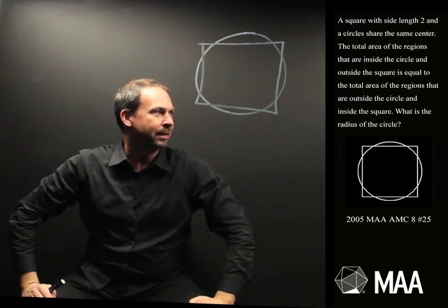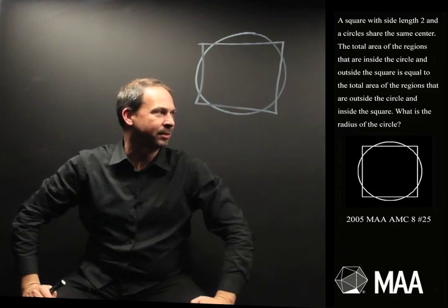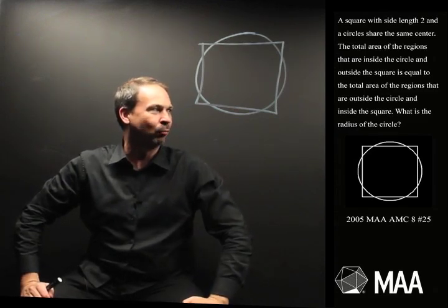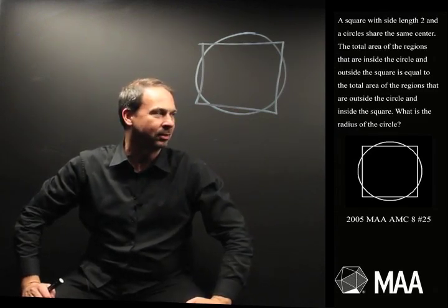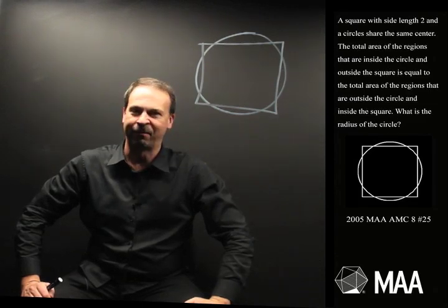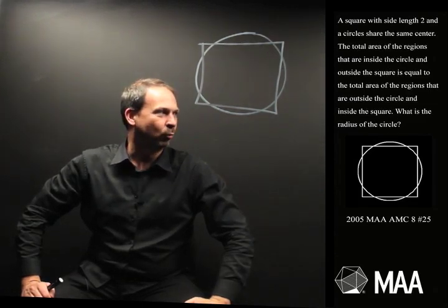The total area of the regions that are inside the circle and outside the square is equal to the total area of the regions that are outside the circle and inside the square. Okay, I just read that but I have no idea what I just said. What is the radius of the circle?